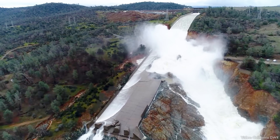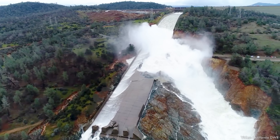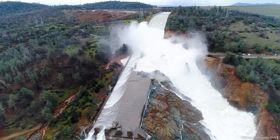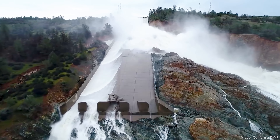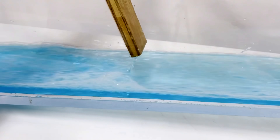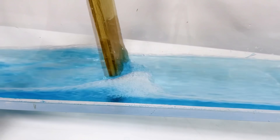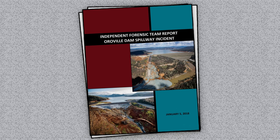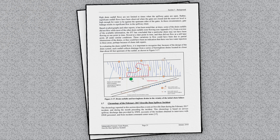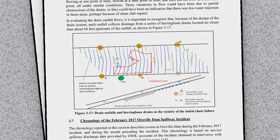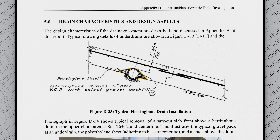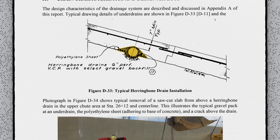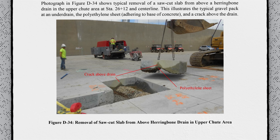In February of 2017, one of the largest spillways in the world, the one at Oroville Dam in Northern California, was severely damaged during releases from heavy rain. In the forensic report following the incident, one of the contributing causes identified in the failure was the drainage system below the spillway. Rather than being installed below the concrete, each drain protruded into it, reducing the thickness of the concrete and making it more prone to cracking.